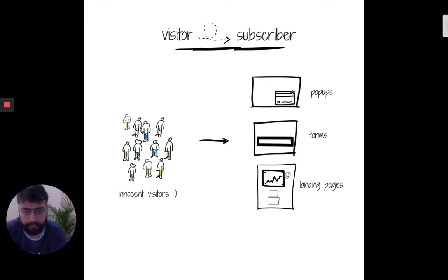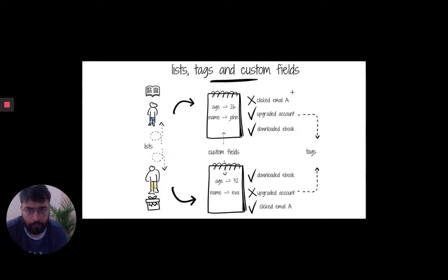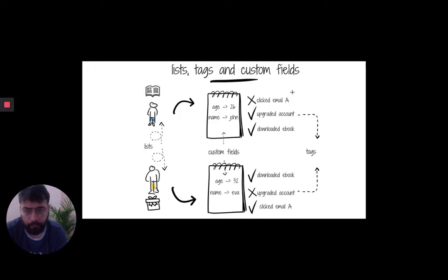If you are doing content marketing or SEO, you may end up using pop-ups and forms to reach out to your visitors at the right moment so that they are ready to give their email address. And if you are running paid ads on Facebook or Google, you may be using landing pages to convert them. Once you have converted these folks into subscribers, different people may behave differently — some may click your email, some may visit your page, some may perform specific activities.